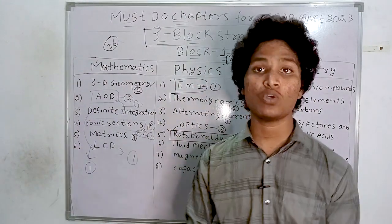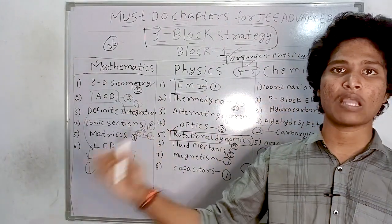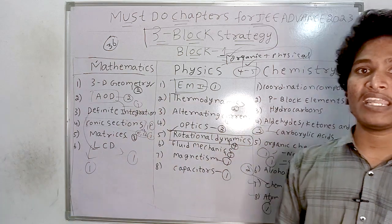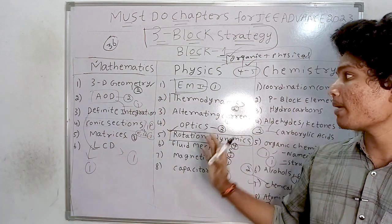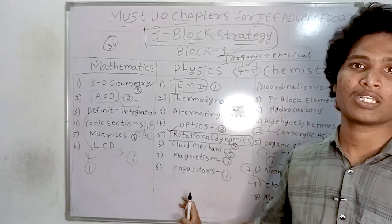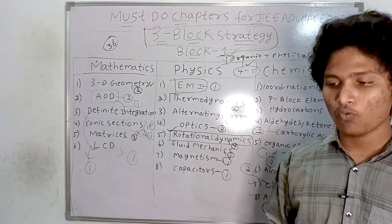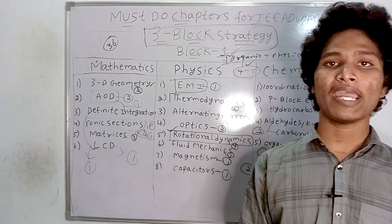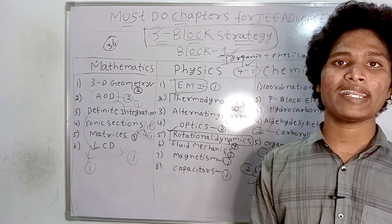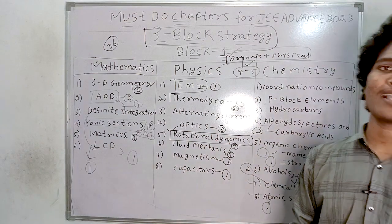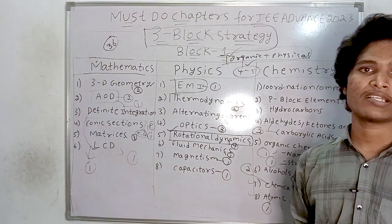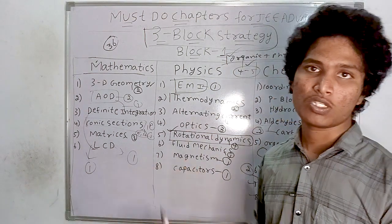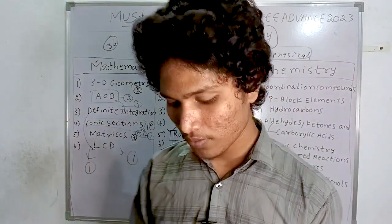Take a screenshot of block one and make it a priority, because these chapters will get you into newer IITs — including top branches like computer science, and electronics and communication. If you want to go to old IITs and top branches, prepare blocks two and three as well.